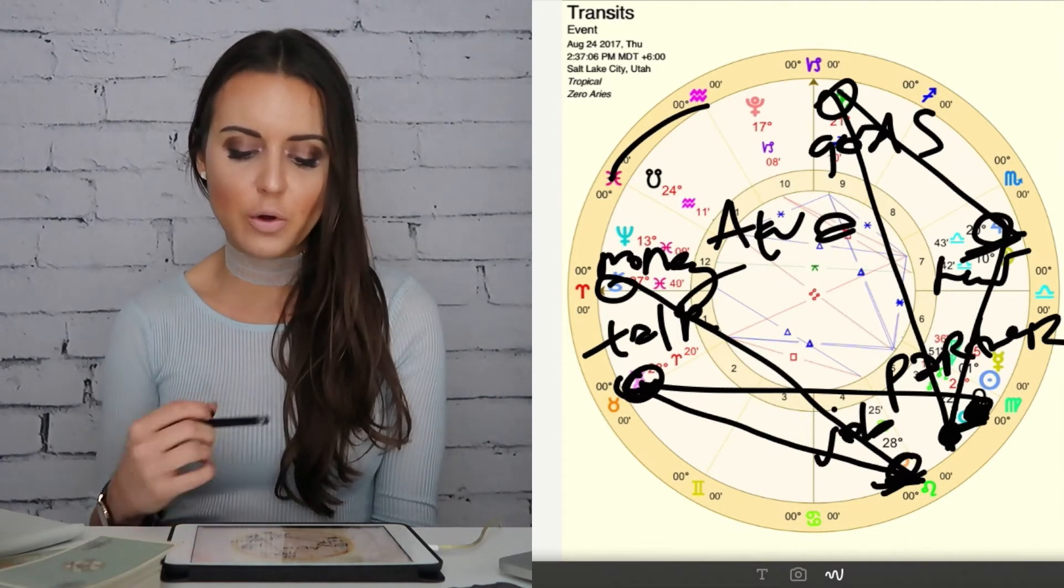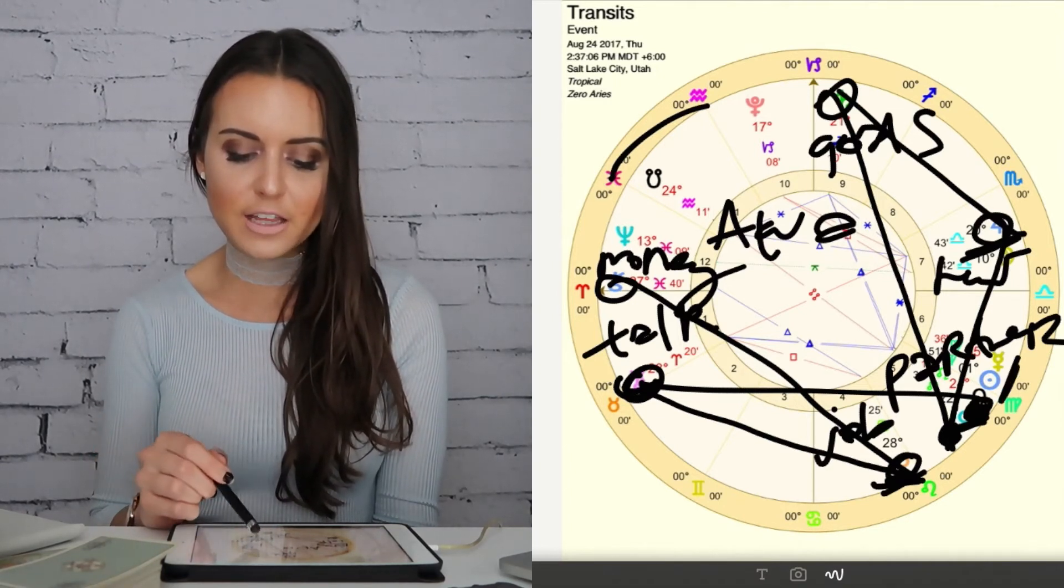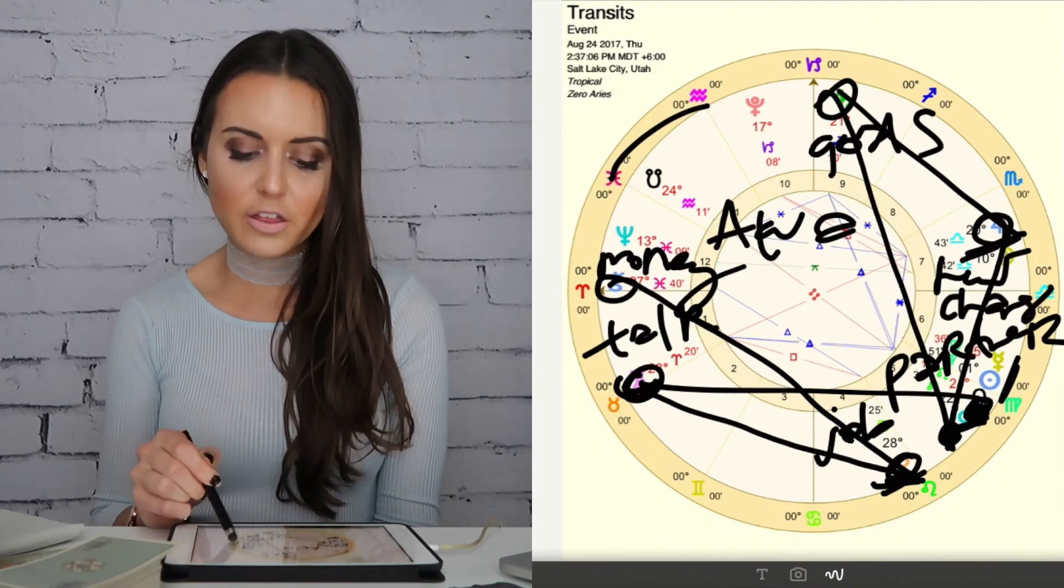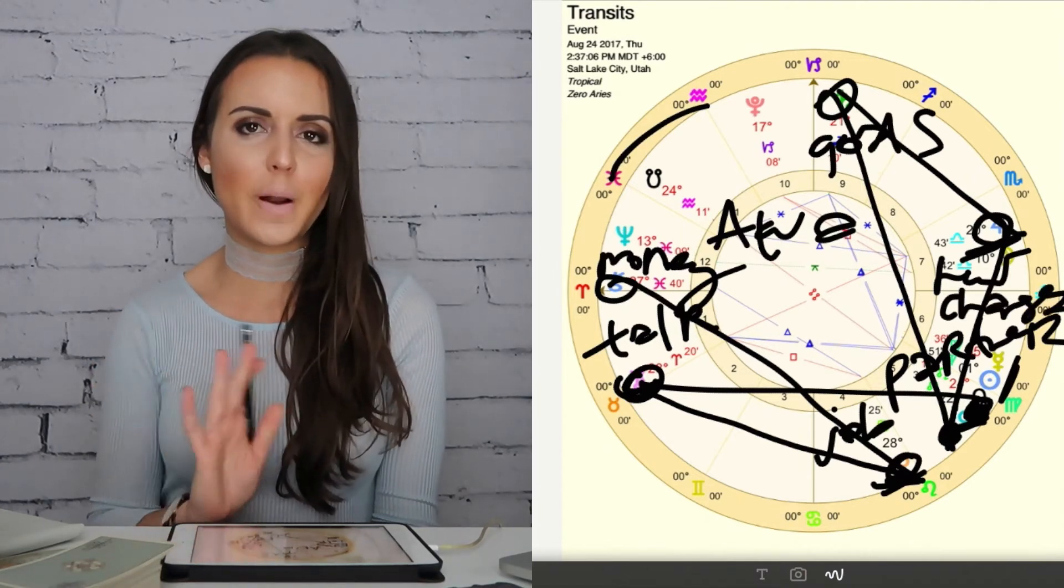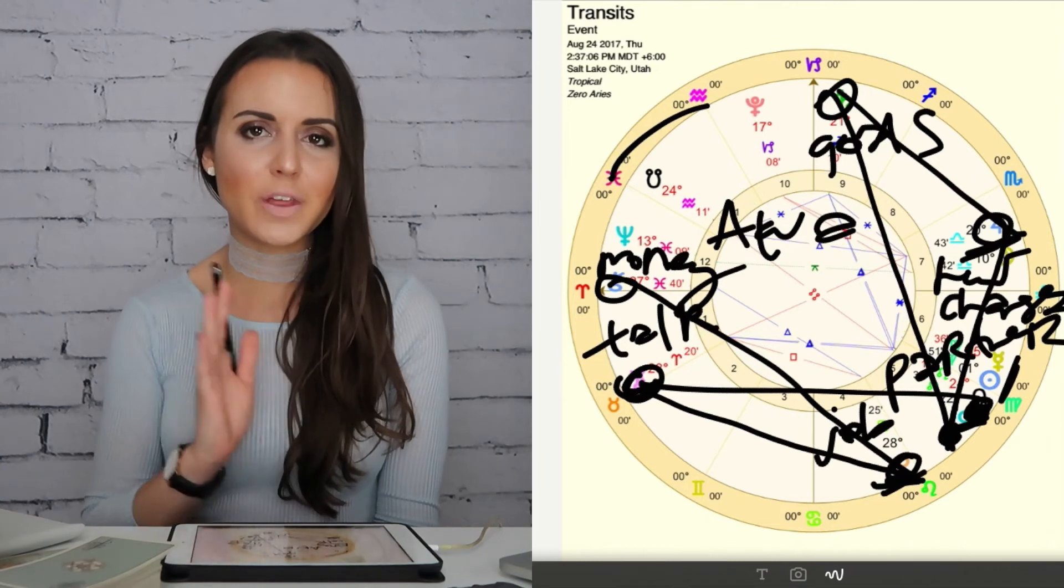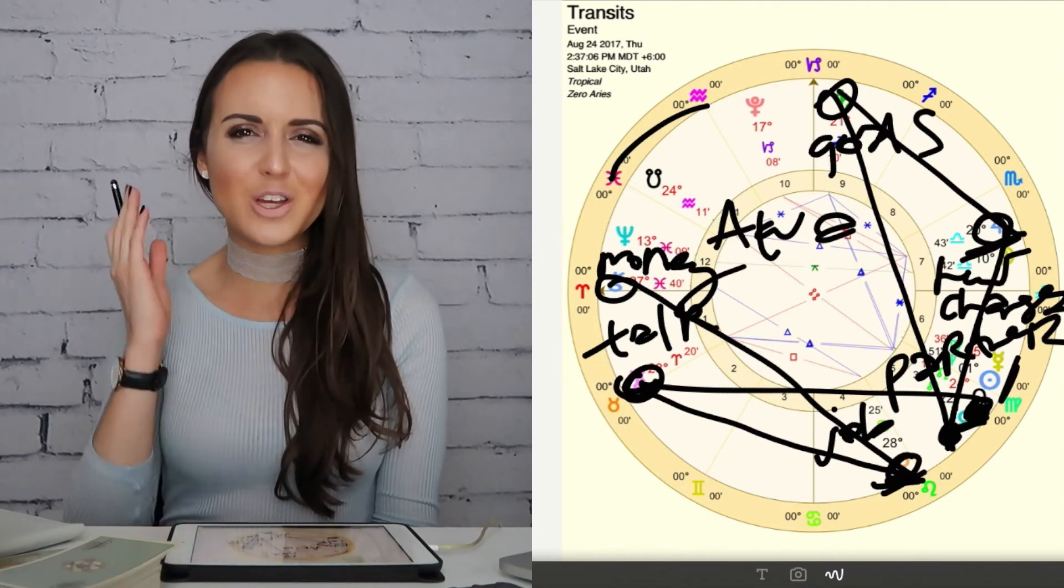We've got Mercury conjunct the Sun in your eighth house of changes. I think there is some kind of ending or beginning that you want to make in your life to do something more true to you that you really want, and you're rethinking that.